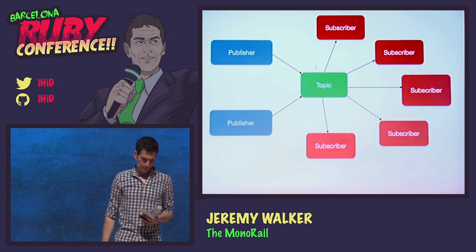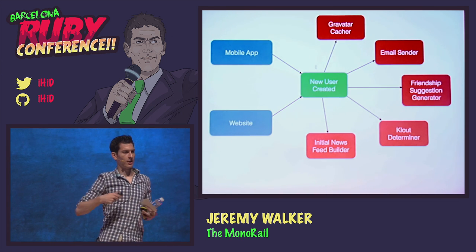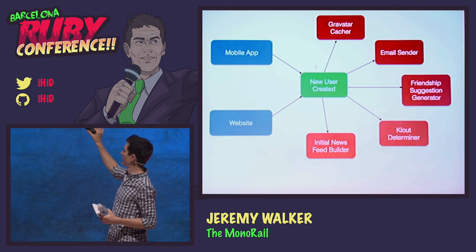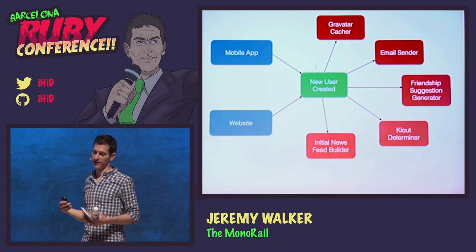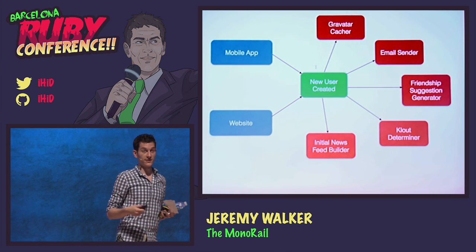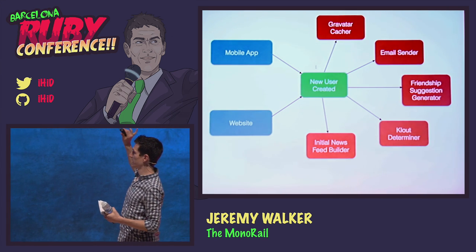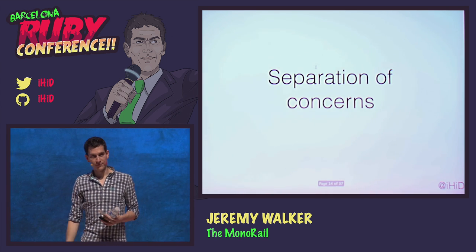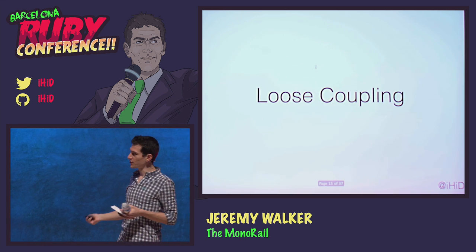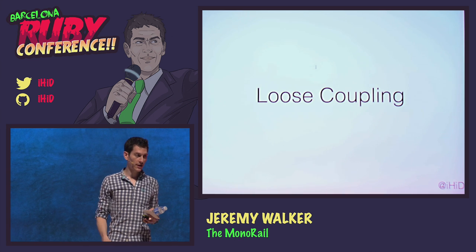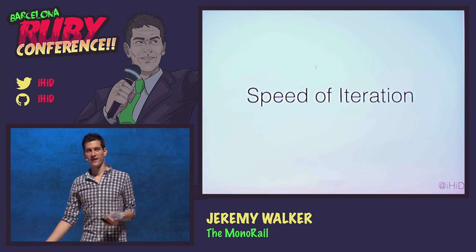To give you an example, you might have a mobile app and a website both publishing a message about a new user being created. Then you might have all these different things that respond to that. From our app: something that sends a welcome email, something that generates friendship suggestions, something that determines the user's clout, something that builds an initial news feed. All of these have their own concerns, which means very specific services, great loose coupling, scalability, easy to add and remove functionality, and a great speed of iteration.